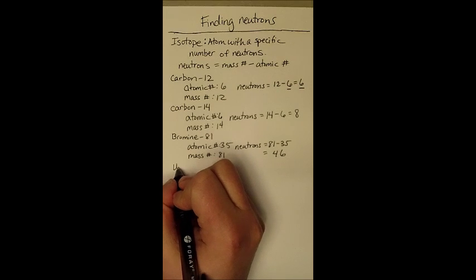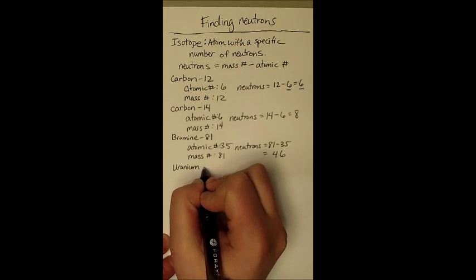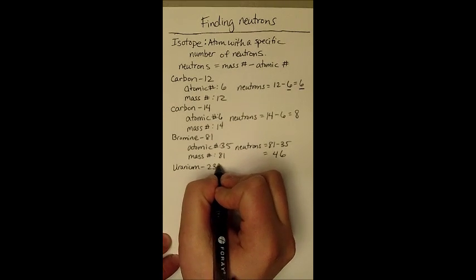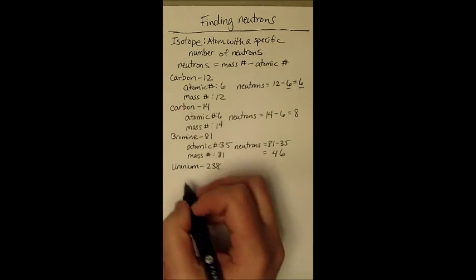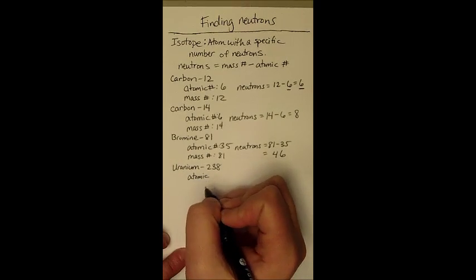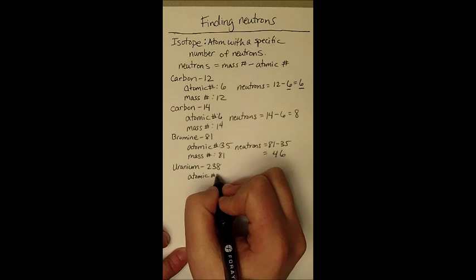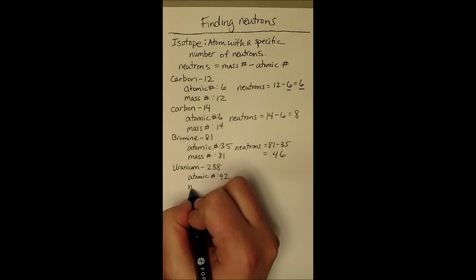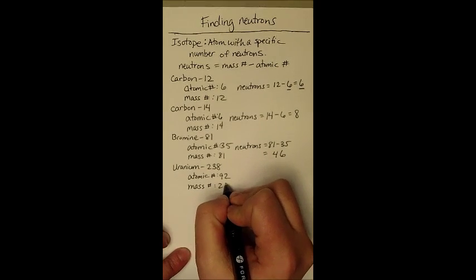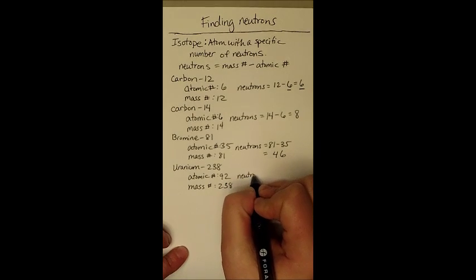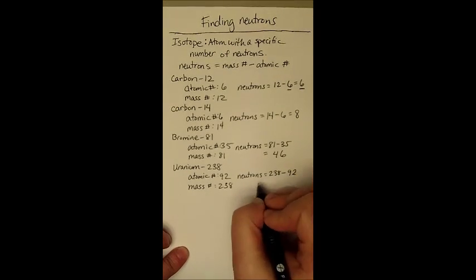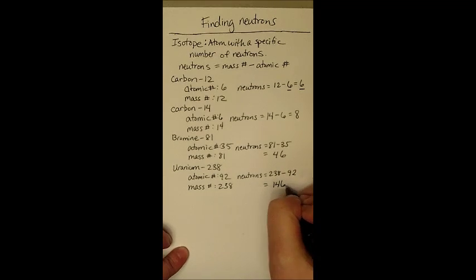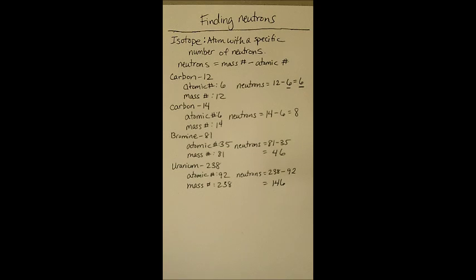One last example, here is uranium. A common type of uranium is uranium 238. This is actually not something that's used for nuclear bombs or nuclear reactors, but it is uranium and it's an isotope. The atomic number of all uranium is 92. The mass number is 238. The number of neutrons, as you have come to be able to calculate, is 238 minus 92, with our final number being 146 neutrons in uranium 238.